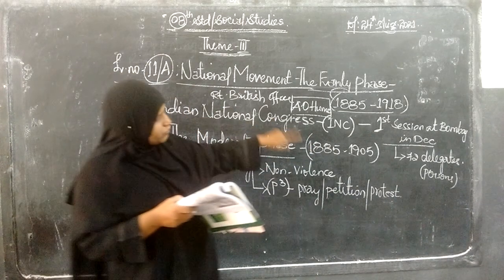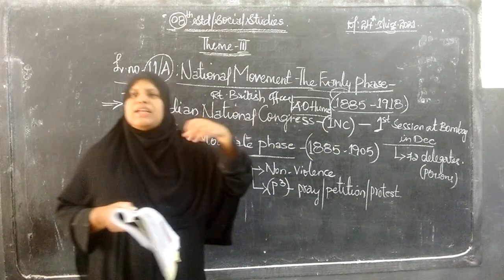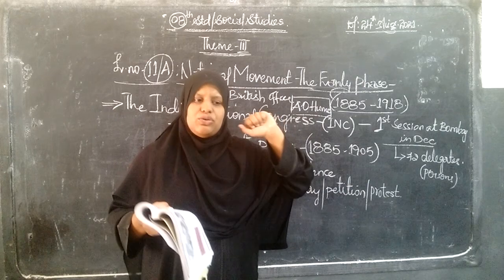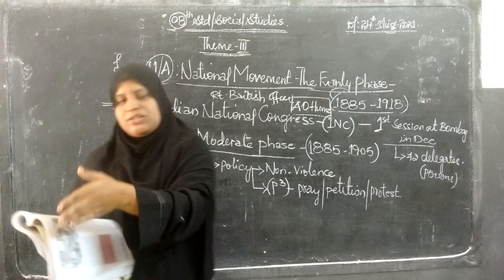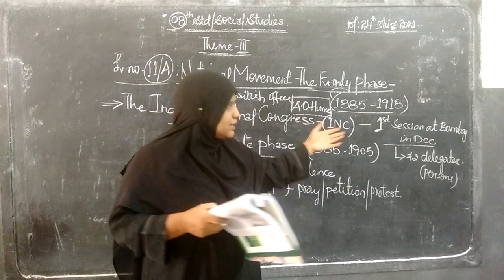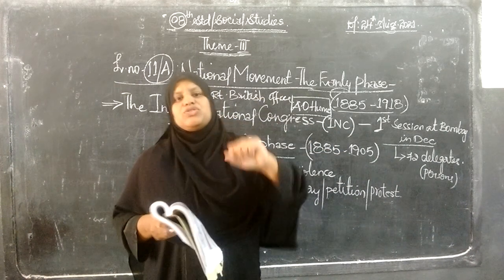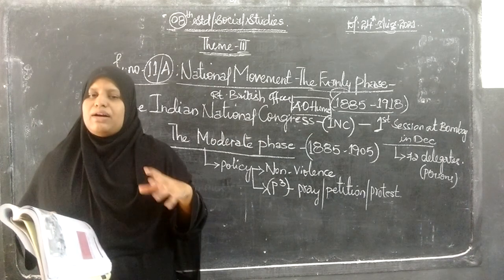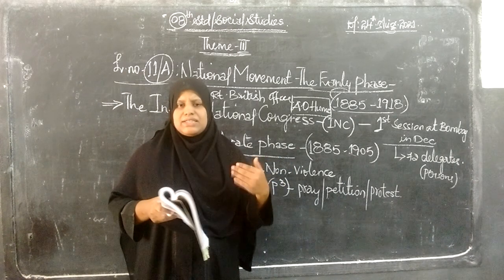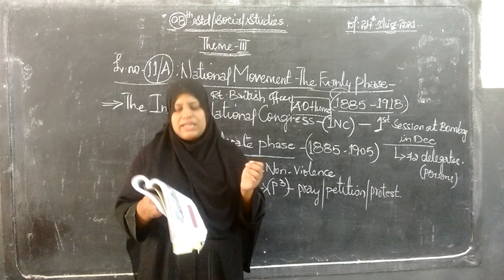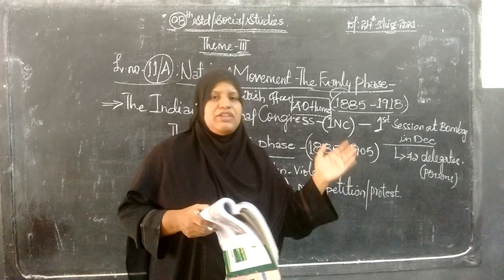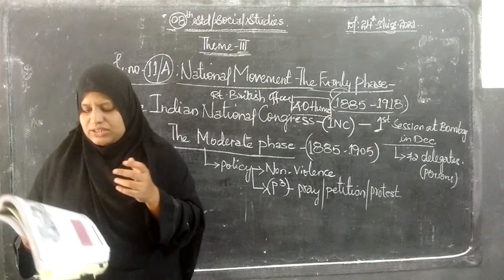At the same time, they realized that unity could be built only by accommodating the special requirements of different regions and religious communities of India. They decided to hold Congress sessions in every part of India every year, and not to pass any resolution which was objected to by any religious group. These sessions were aimed at getting to know the problems of people across different provinces.